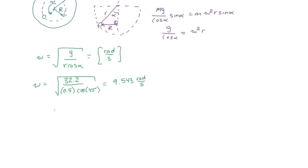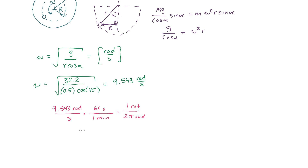The problem asks for RPM, so we convert 9.543 rad/s using dimensional analysis: multiply by 60 seconds per minute, then divide by 2π radians per rotation. This gives ω = 91.129 RPM.